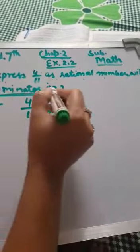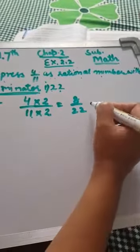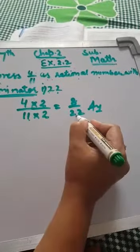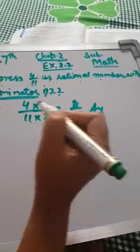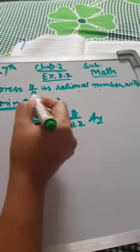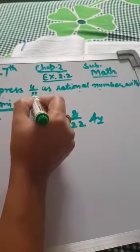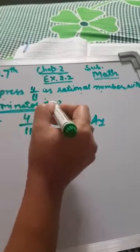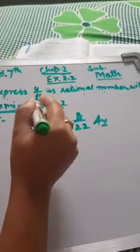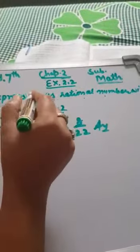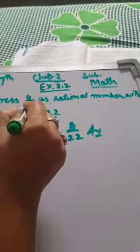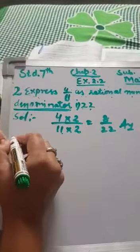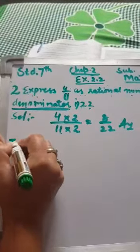Converting 4 over 11 to a rational number with denominator 22 gives us 8 over 22. Think about how you can convert the denominator: denominator is 11, think over how you can convert 11 into 22.